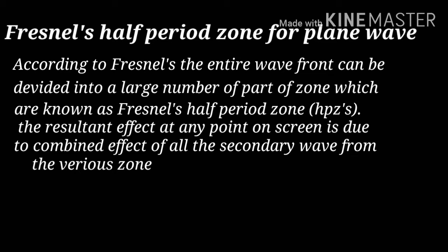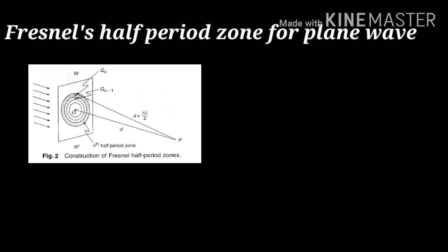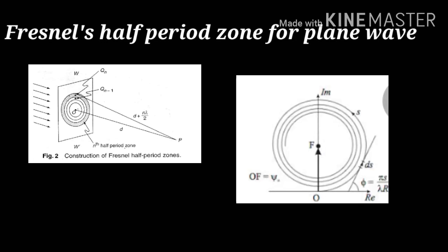The resultant effect at any point on a screen is due to the combined effect of all the secondary waves from the various zones. Fresnel Half Period zone says that any plane wave is divided in various parts in large numbers.